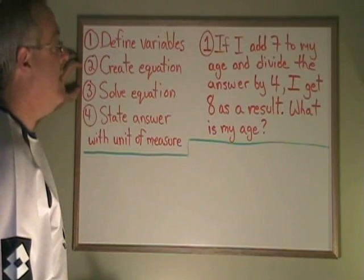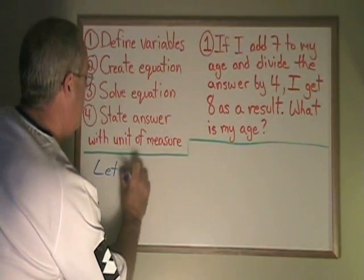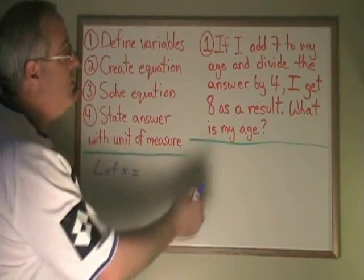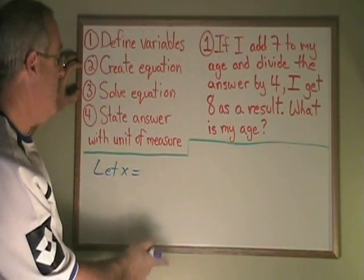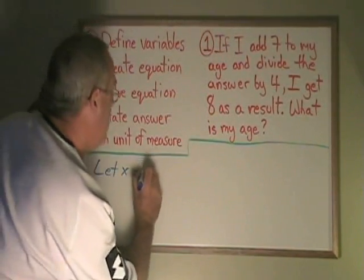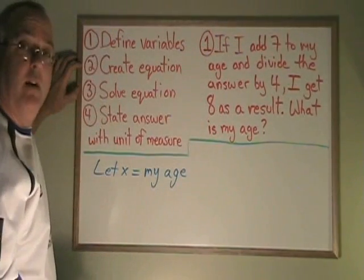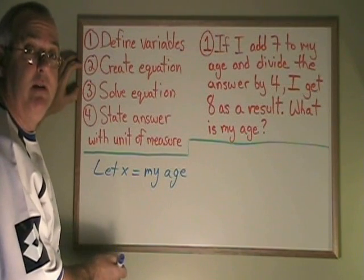The first step is to define the variables. So we say, let x equal, and we define our variable. Usually, the question at the end tells you what you need to define your variable as. So what is my age means let x equal my age. Defining the variable helps us see what we're doing when we're building our equation. It makes the next step easier.